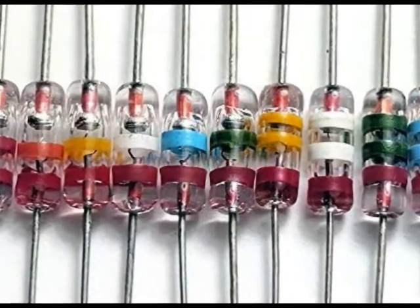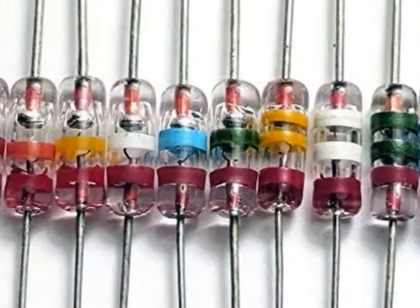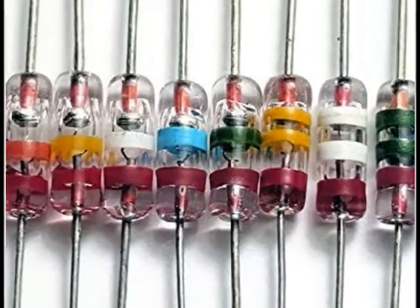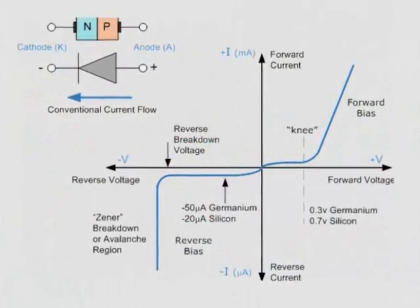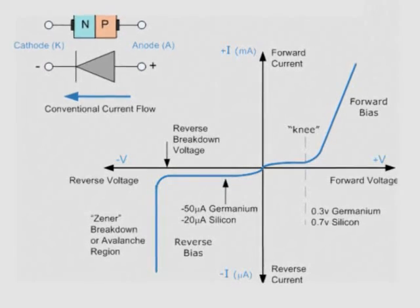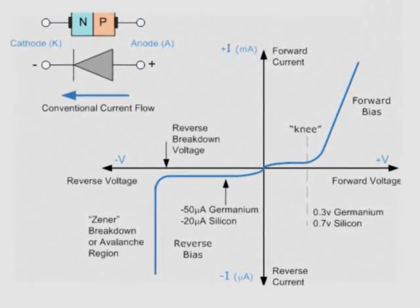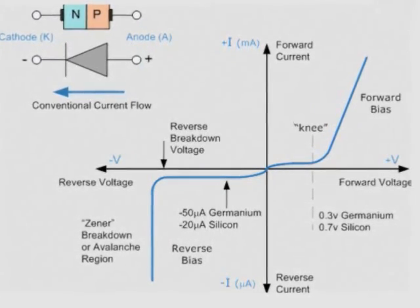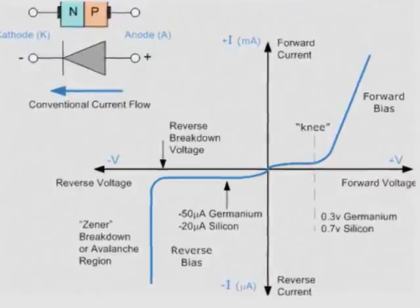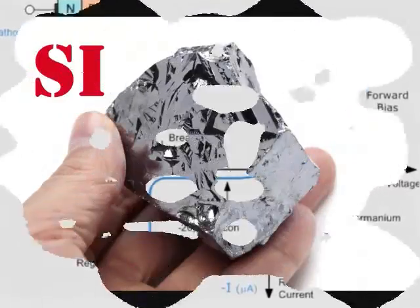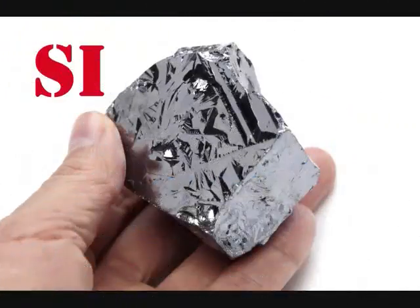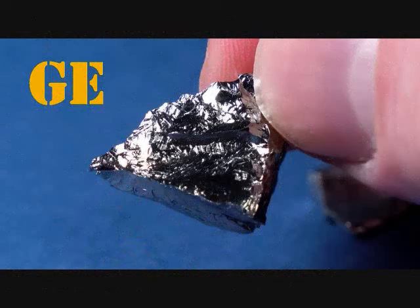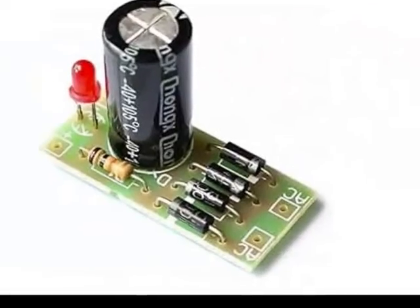Germanium diodes have a higher reverse leakage current, and it increases with temperature. Another drawback of the germanium diode is its low reverse blocking voltage, which limits its performance to low voltage rectification only. The silicon diode has a higher rating than germanium, making germanium obsolete for DC rectifier circuits.